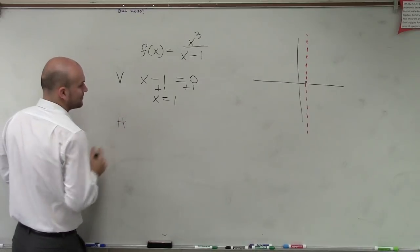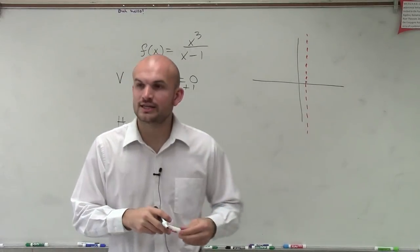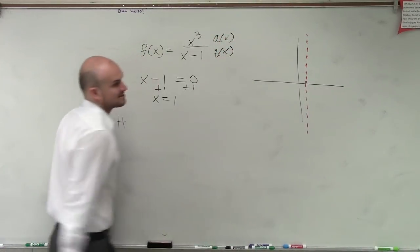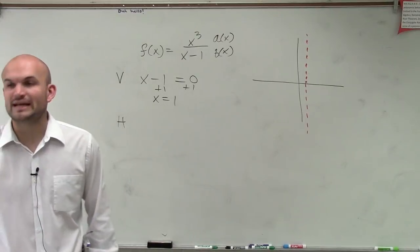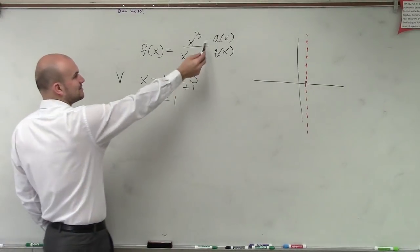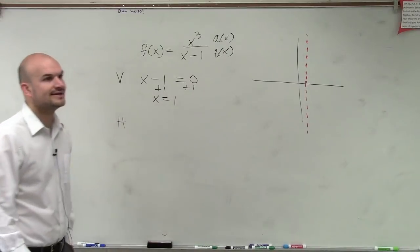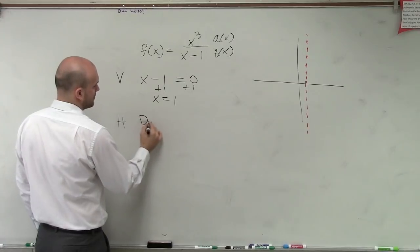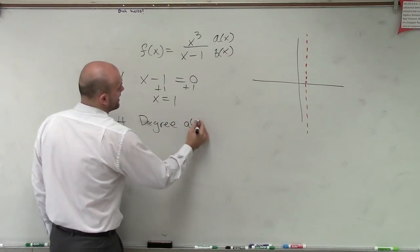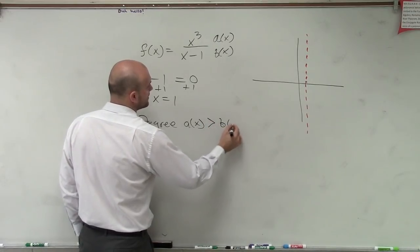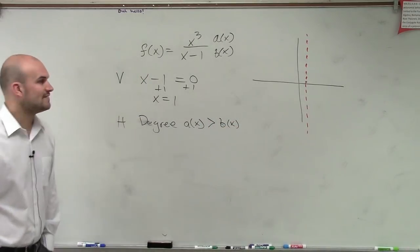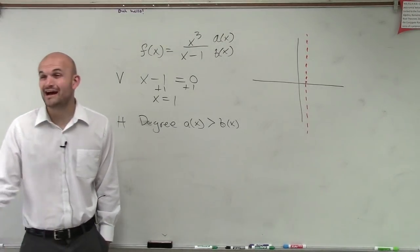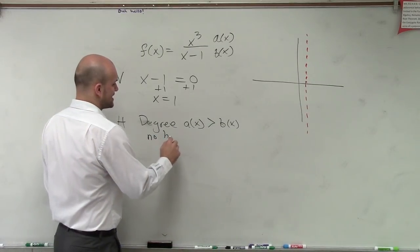Now let's look at the horizontal asymptote. We need to look at the two degrees — we have a(x) over b(x). When we look at the degrees, the degree of a(x) is larger than b(x). So when the degree of a(x) is larger than b(x), that tells us there is no horizontal asymptote.